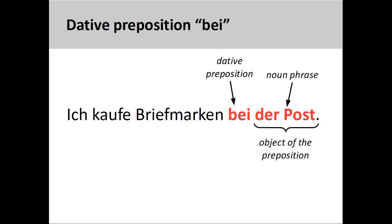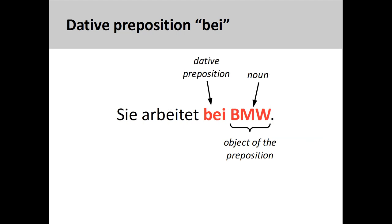When you want to express the idea that you purchased something at a certain store or place, you also must use bei as the preposition. Ich kaufe Briefmarken bei der Post — I am buying stamps at the post office. Finally, bei can be used to express that you work at a specific company or business. For example, sie arbeitet bei BMW — she works at BMW.